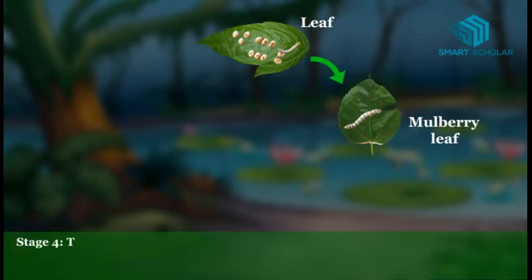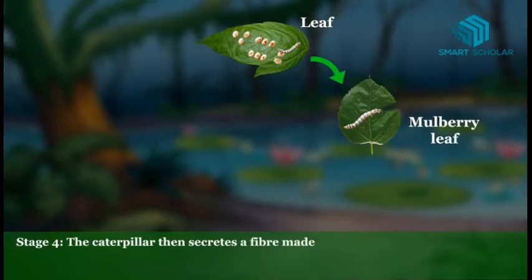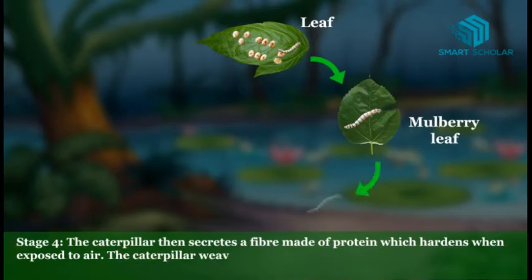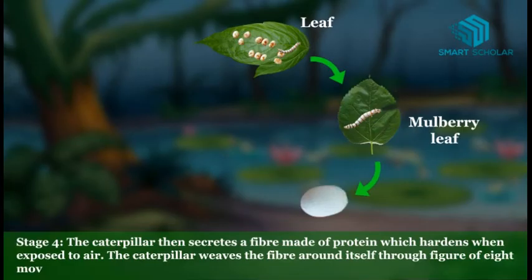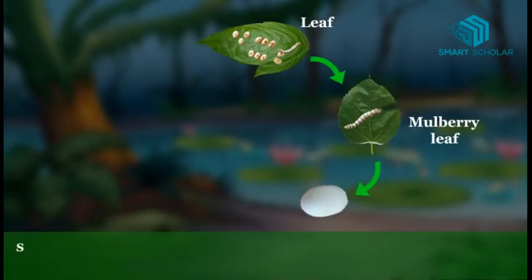Stage 4: The caterpillar then secretes a fiber made of protein which hardens when exposed to air. The caterpillar weaves the fiber around itself through a figure-of-8 movement of its head, forming a cocoon.